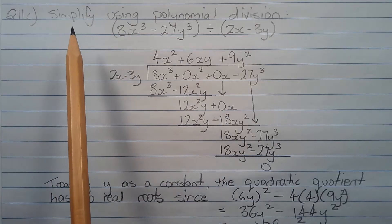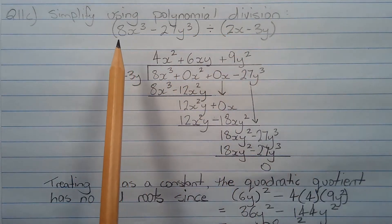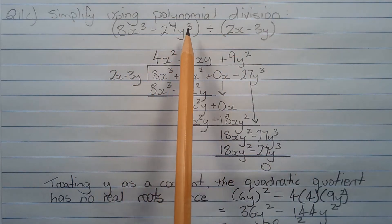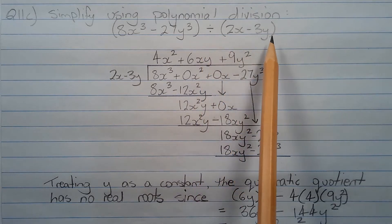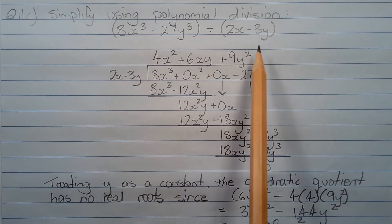I'm going to simplify the expression using polynomial division. In other words, 8x cubed minus 27y cubed divided by 2x minus 3y. This is our dividend and this is our divisor.